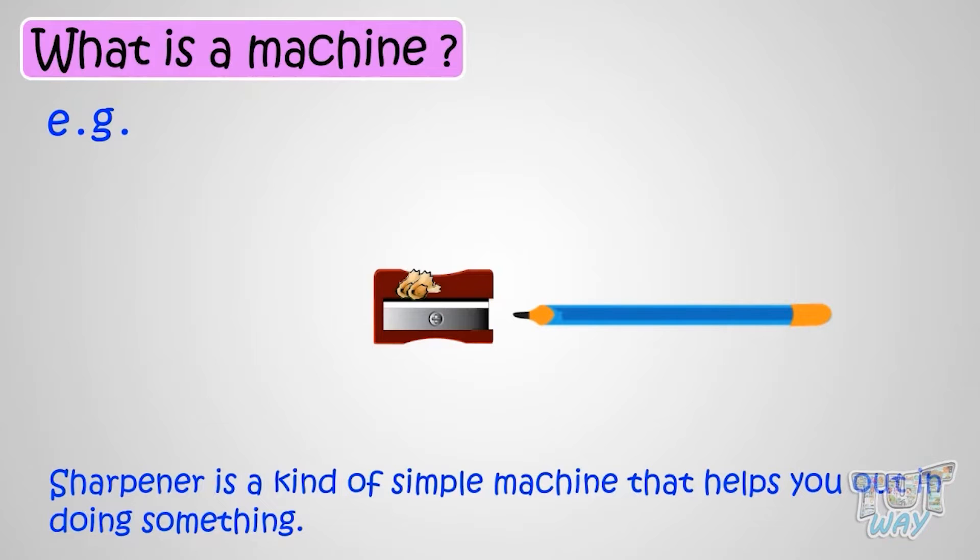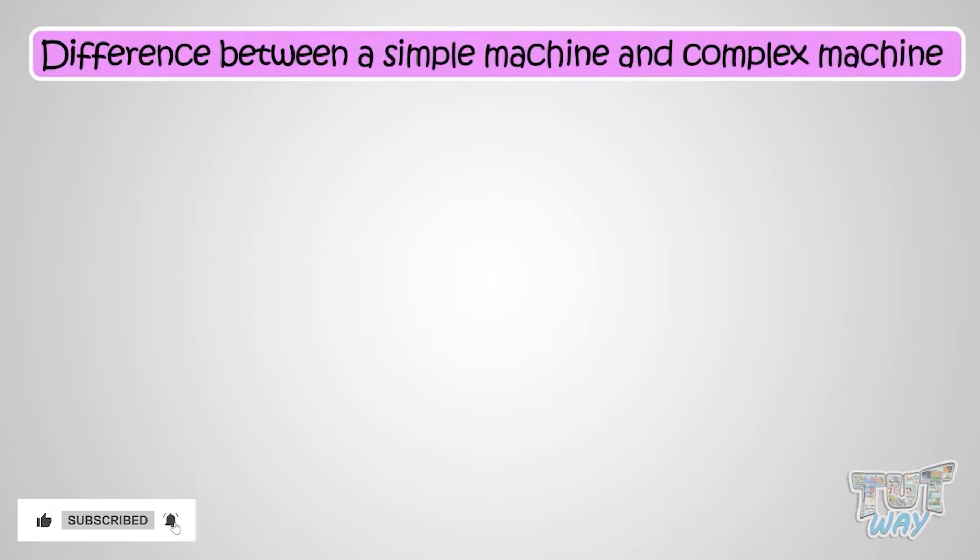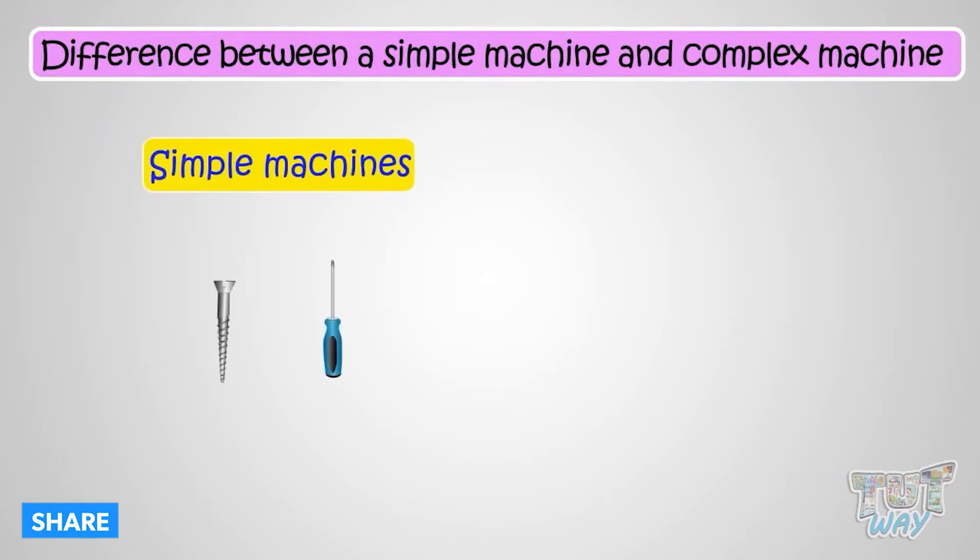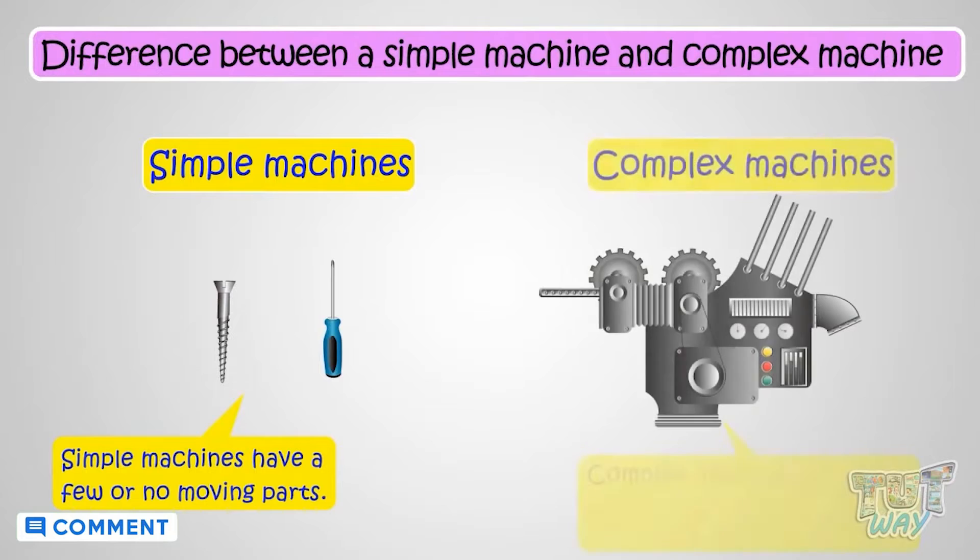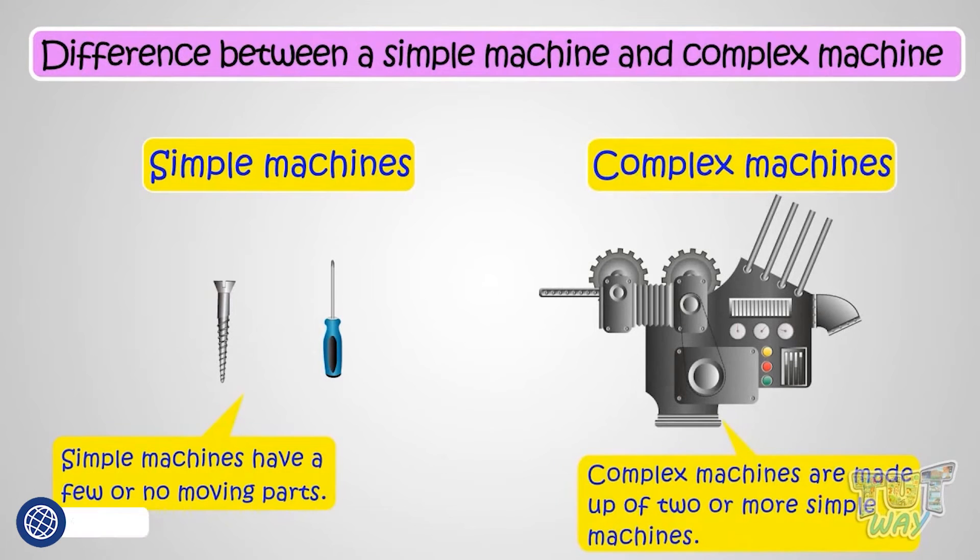Now let's first see what is the difference between a simple machine and a complex machine. Simple machines are those structures that have a few or no moving parts, while complex machines are made up of two or more simple machines working together as a single machine.